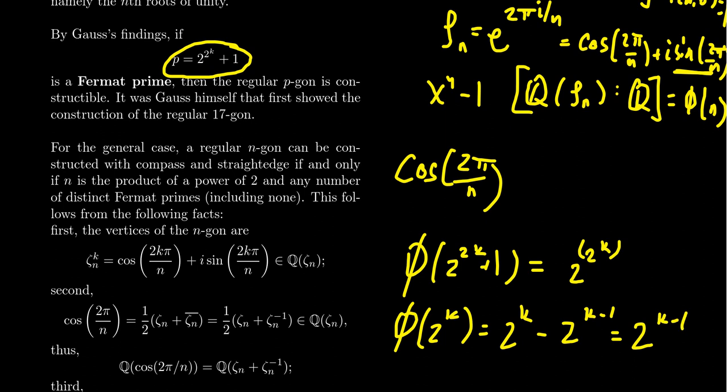If you take phi of 2 to a power, that's a power of 2. If you take phi of a Fermat prime, that's a power of 2. Therefore, if you have a product of a power of 2 and any number of Fermat primes, which could be no Fermat primes, then phi of that number will be a power of 2. And those are the only integers so that their Euler totient is a power of 2.